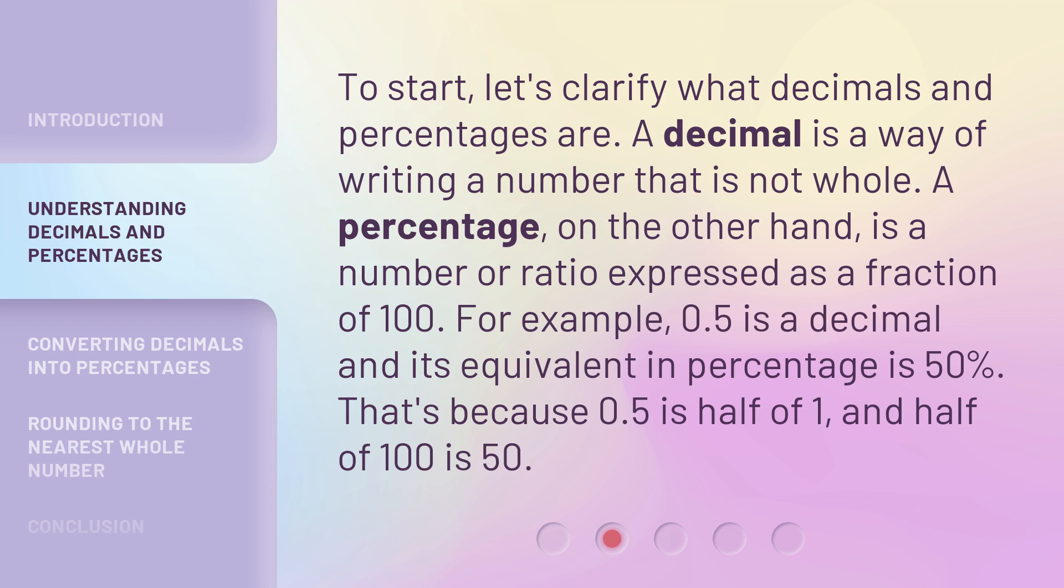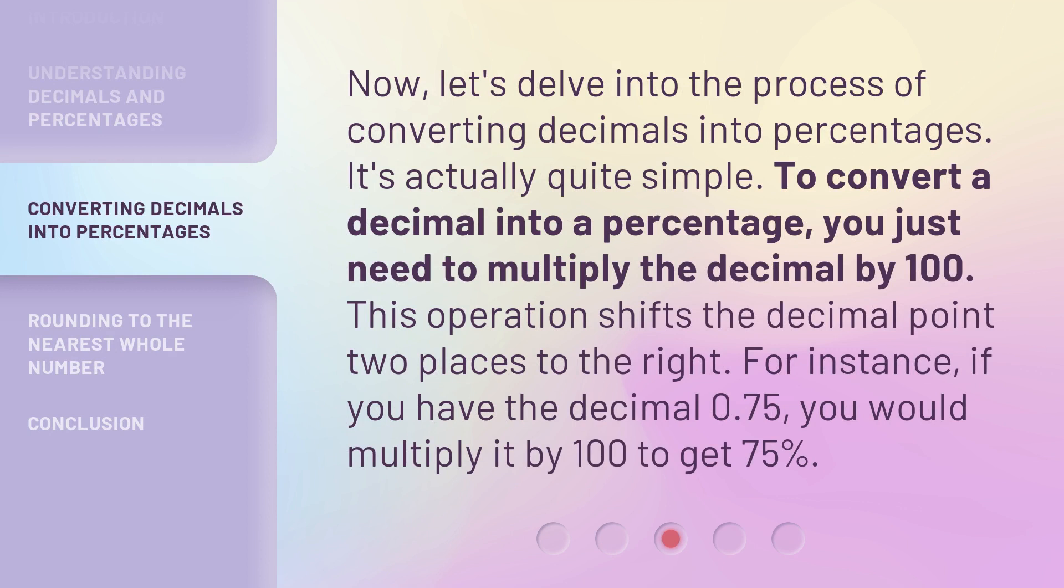For example, 0.5 is a decimal and its equivalent in percentage is 50%. That's because 0.5 is half of 1, and half of 100 is 50%.